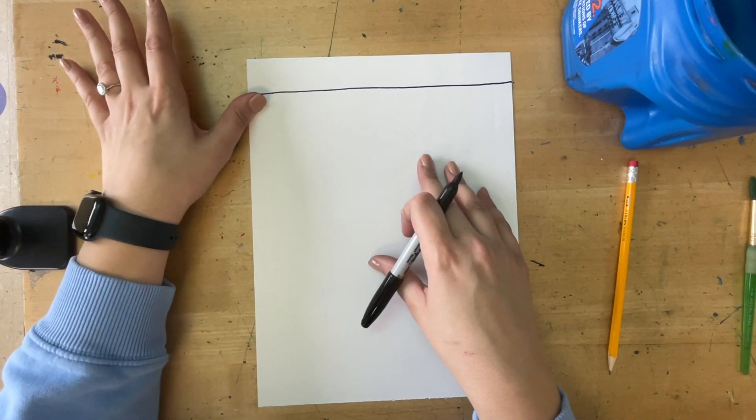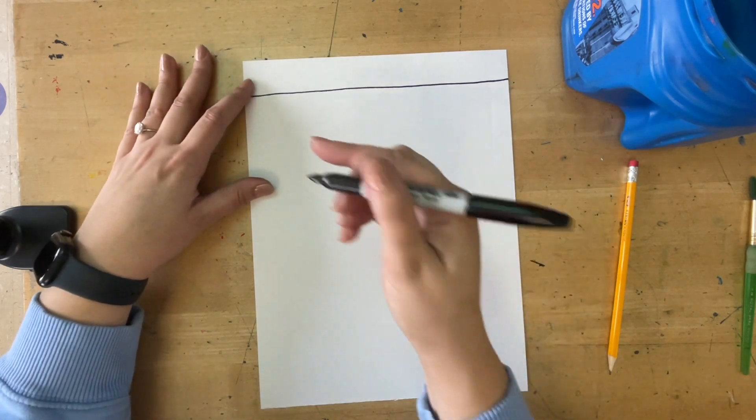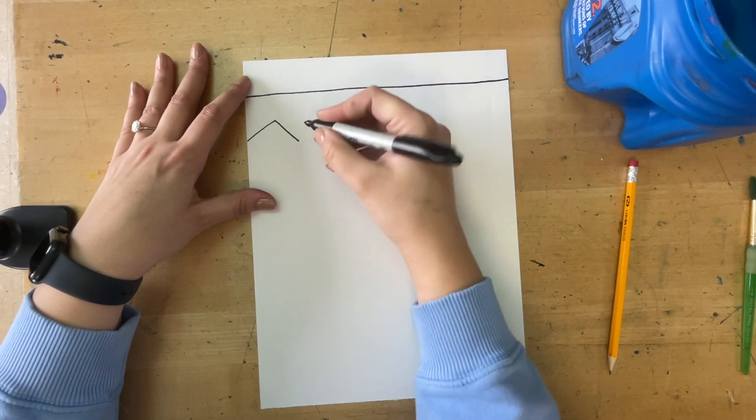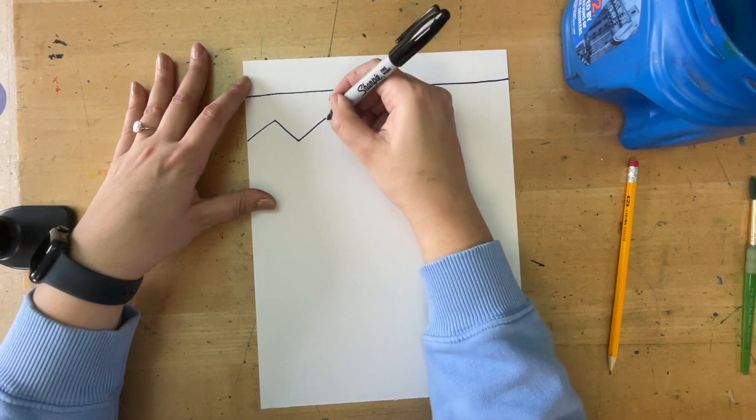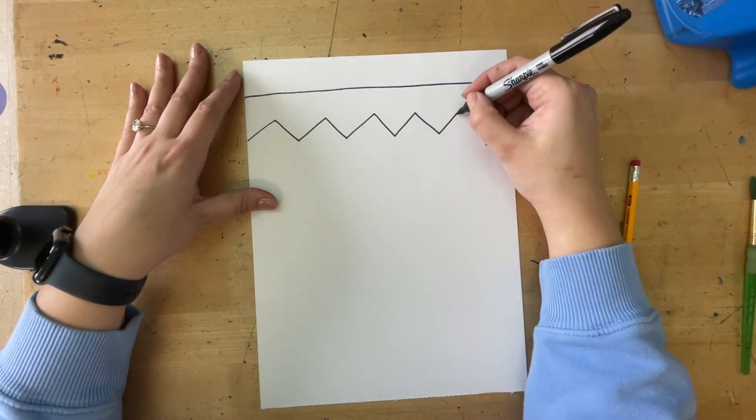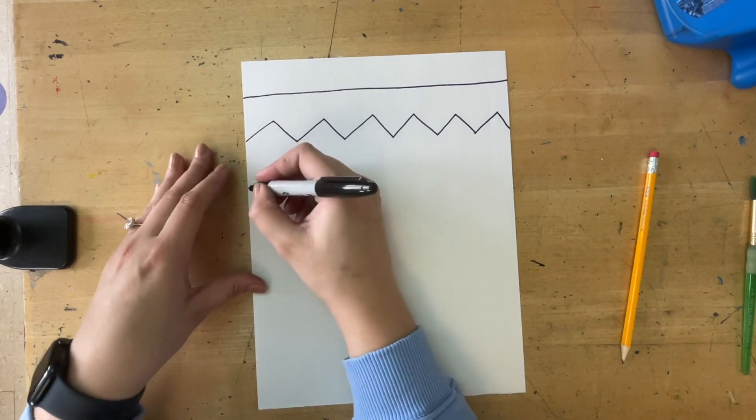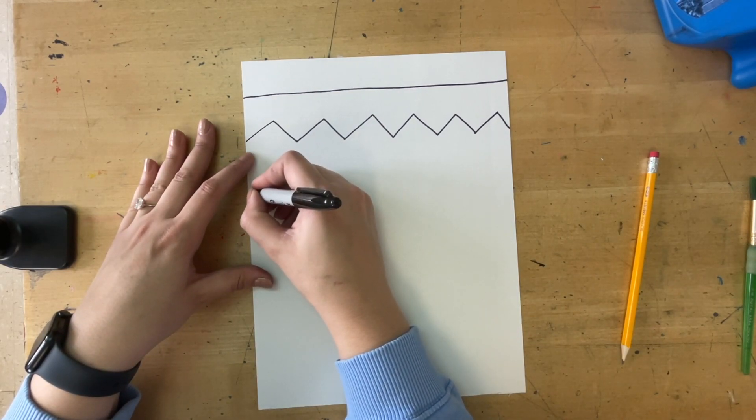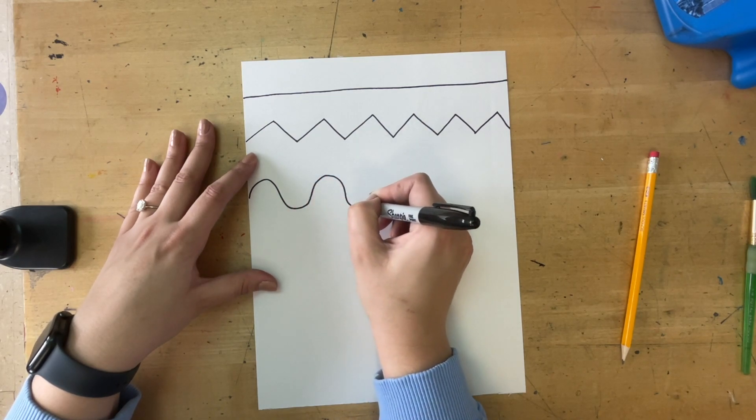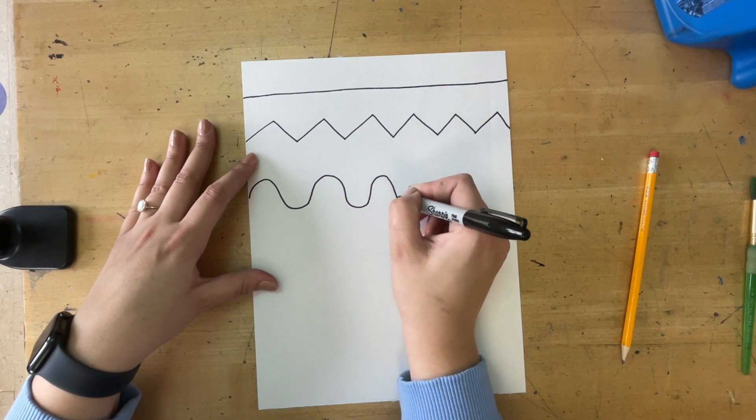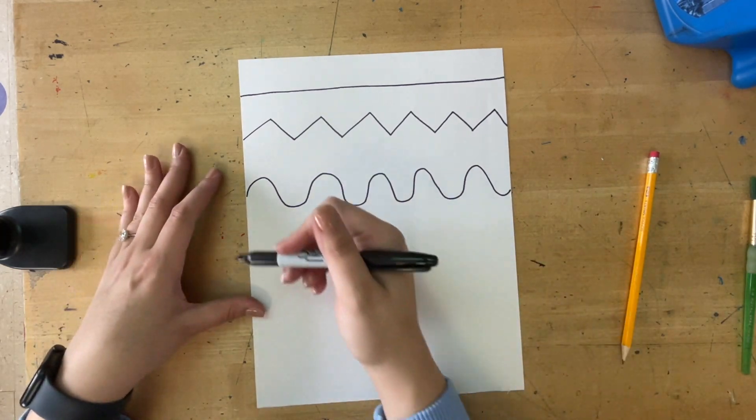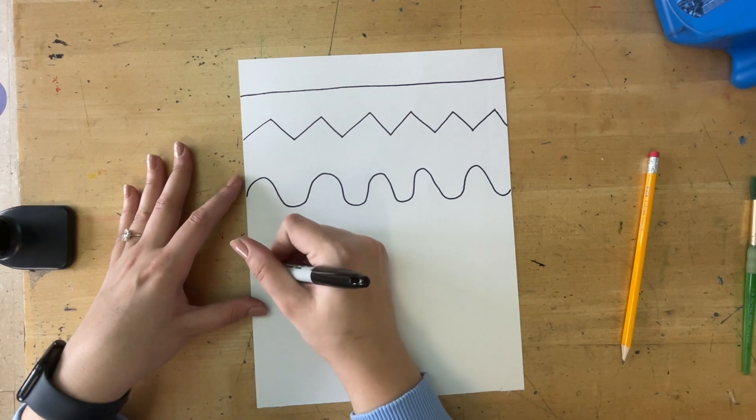About another inch or thumbs length underneath that one, we're going to do a zigzag line. Zigzag line is pretty straight, up at a diagonal and down at a diagonal, all the way across. Next is wavy line, so think of waves in the ocean, up and looped down and looped up and looped. It's almost like the letter U. Next one is bumpy line or a humped line. This one looks kind of like an M.